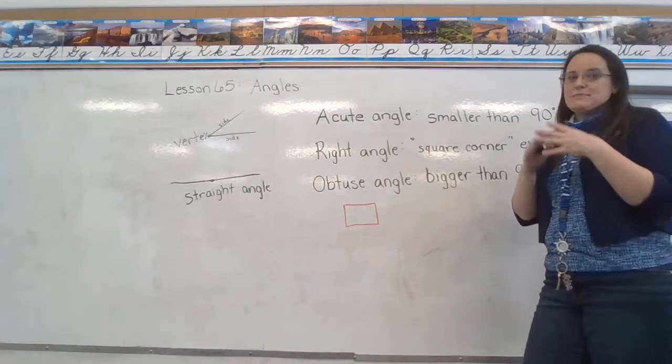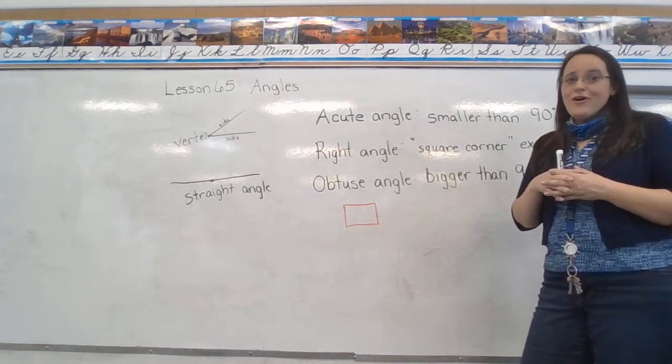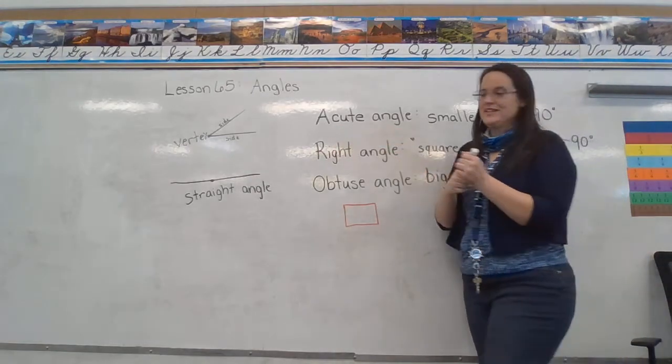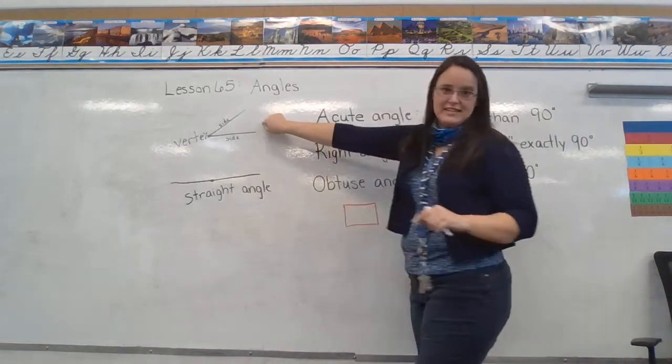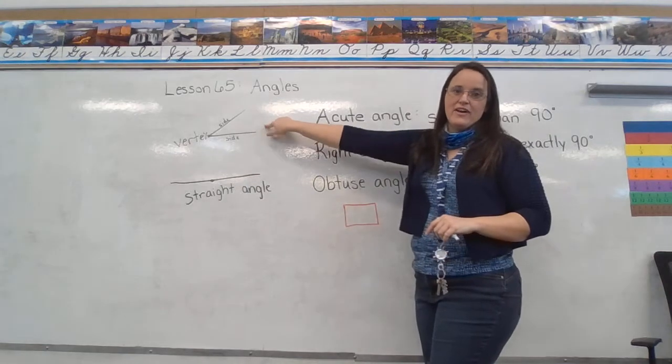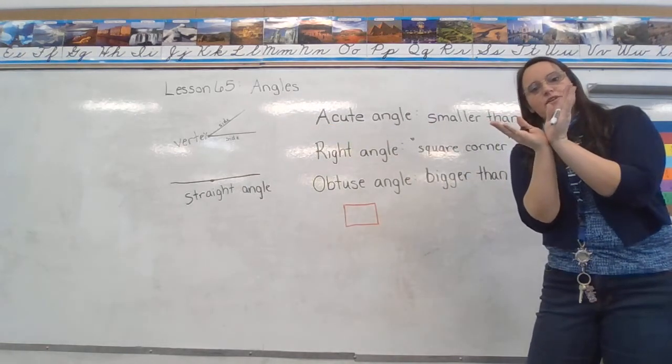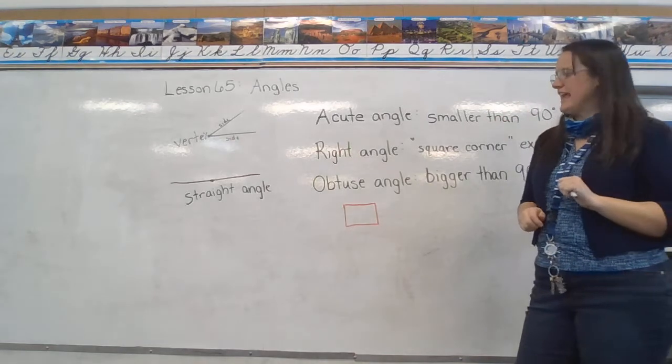So when I see a small little angle, I'll go, oh, what a cute little angle. It's so acute. This would be an example of an acute angle. Anything less than that square corner right angle. A cute little angle.